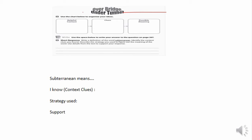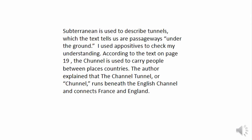Let me refer back to my instructions: write a definition of the word subterranean; identify the context clues you found; describe the strategy used to figure out the meaning of the word; and use details from the text to support your response. Below, I have it broken down: subterranean means — based on context clues — and what strategies did I use and what was my support.